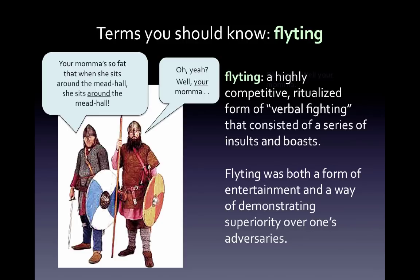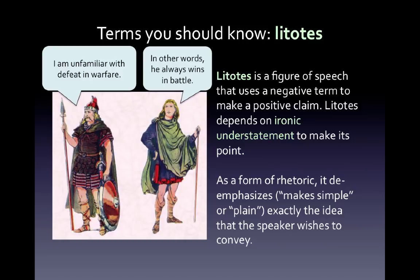Because they were ritualized, formal boasting and flighting were obvious shows of power on the part of the speaker. But within all that bluster, it was sometimes possible to find some subtlety. One less obvious rhetorical strategy was a figure of speech called litotes, which means 'plain' or 'simple' in Greek. Litotes uses a negative term to make a positive claim, and depends on ironic understatement to make its point. As a form of rhetoric, litotes allows the speaker to de-emphasize the very thing that he or she thinks is important, giving a false sense of impartiality which makes the point that much more convincing.